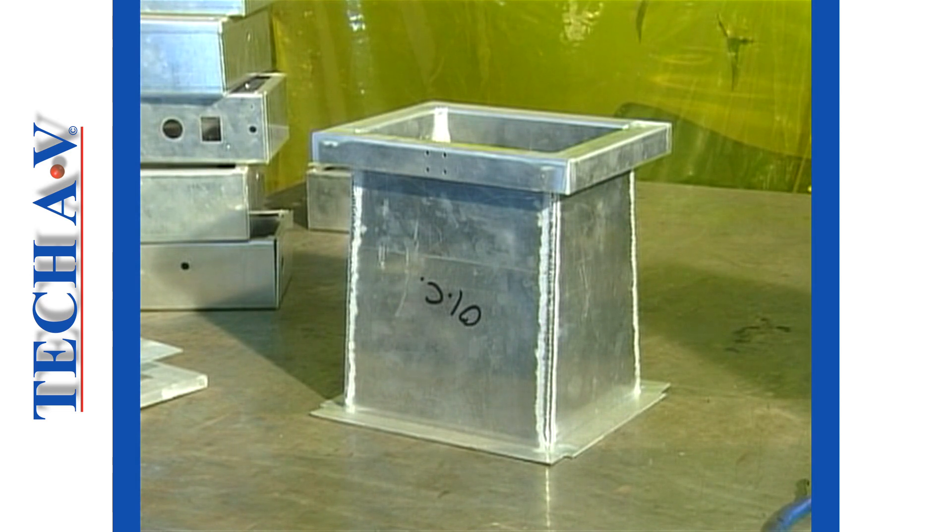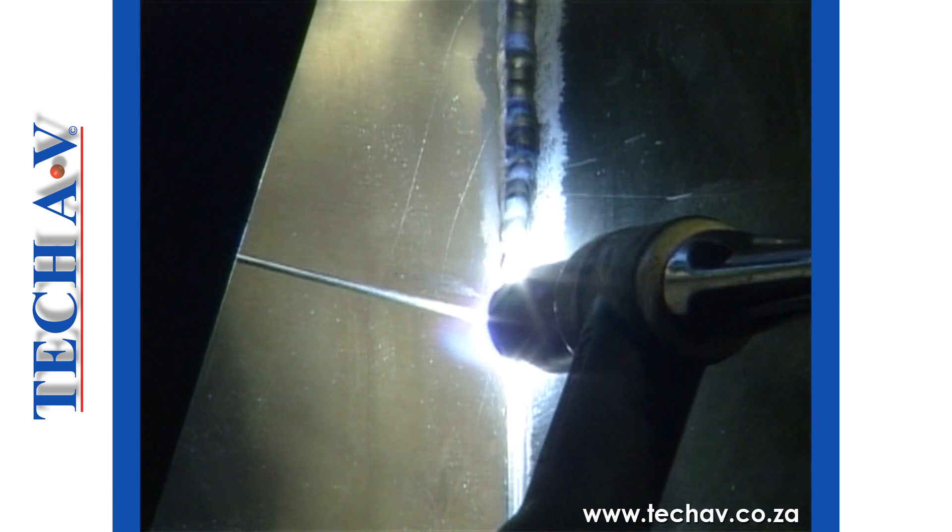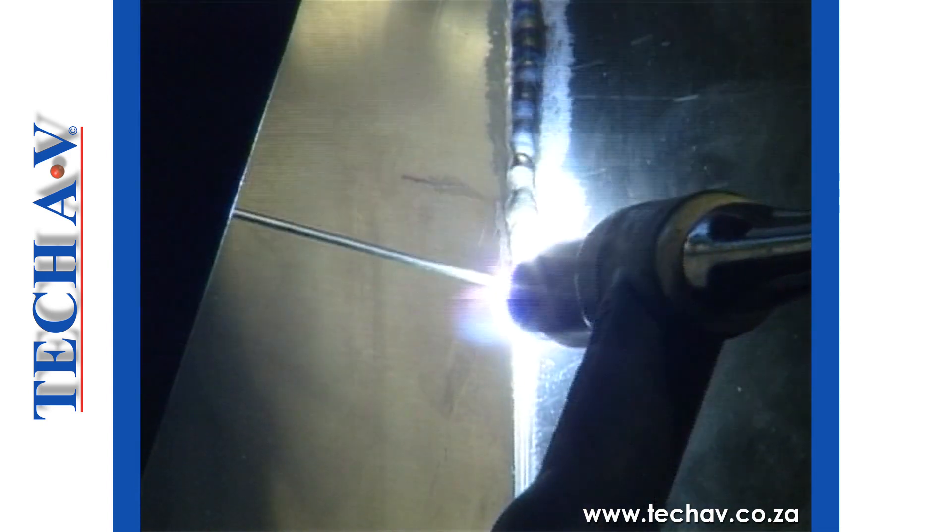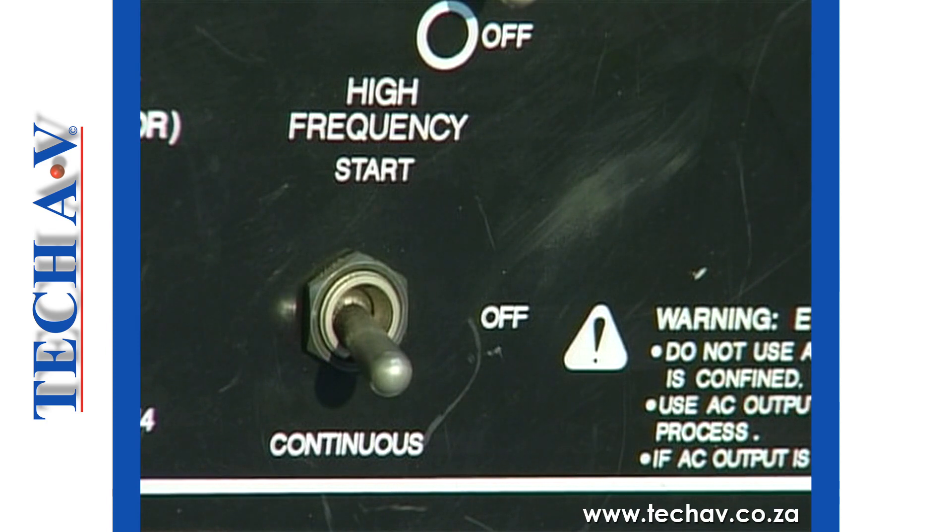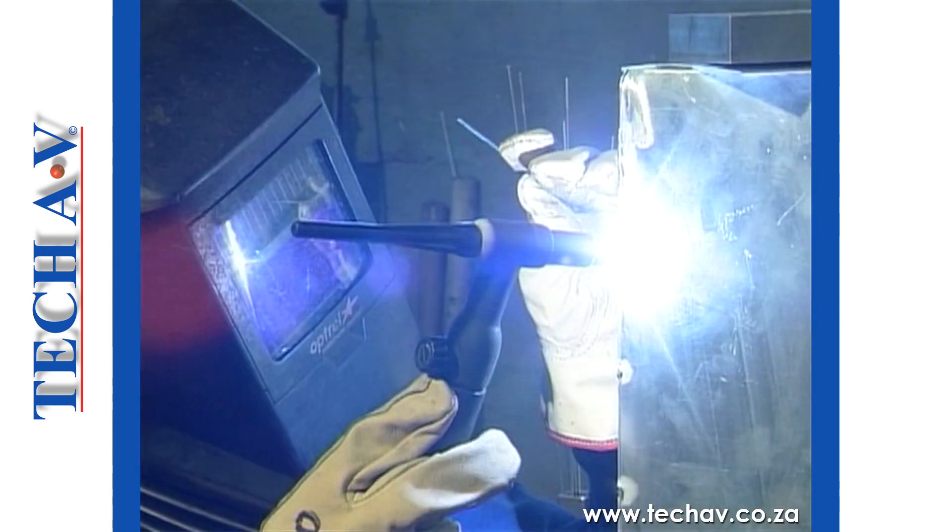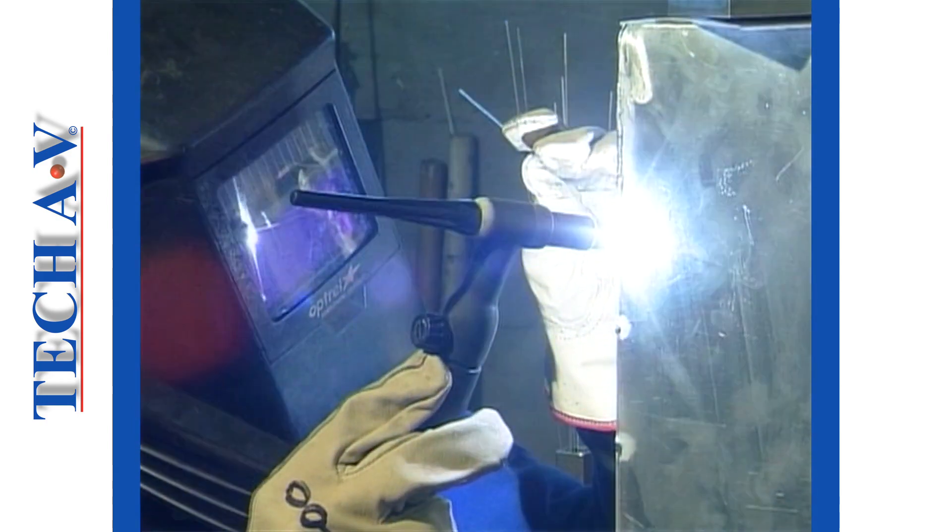With certain metals, notably aluminum, high frequency stabilization is essential in order to maintain the arc. Most good TIG welding machines will offer a high frequency function. In TIG processes, AC-HF is used primarily when welding metals such as aluminum and magnesium alloys.